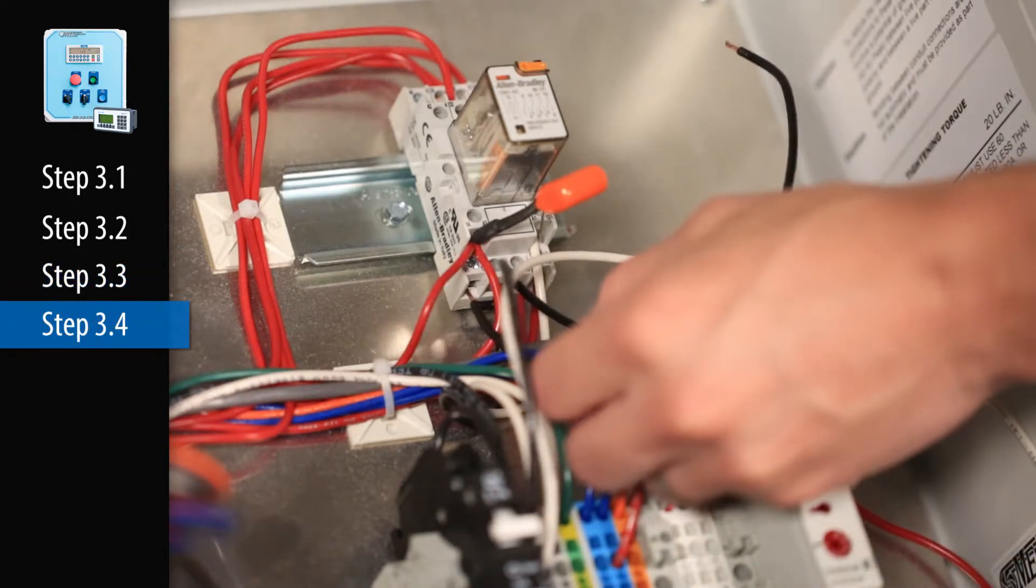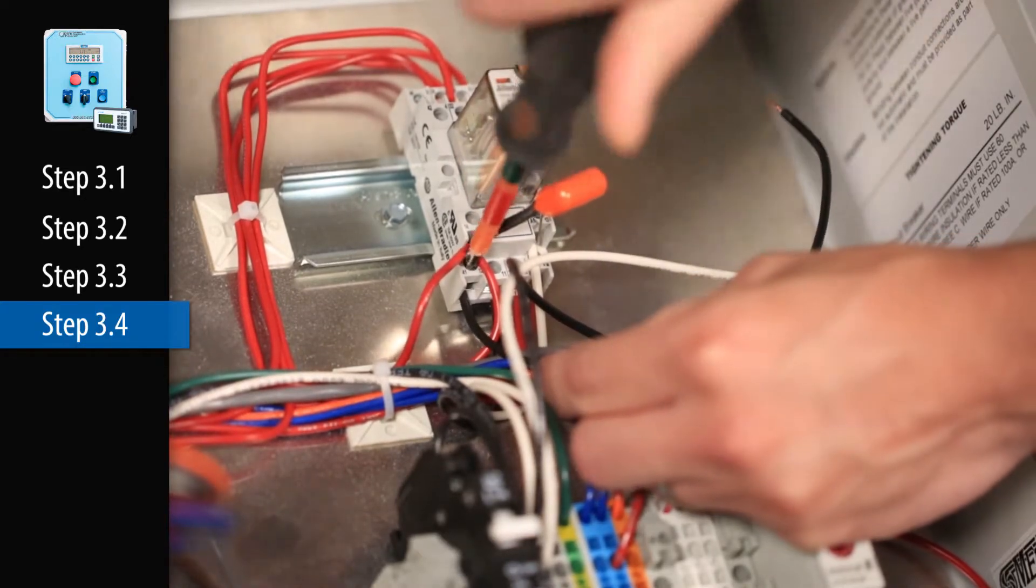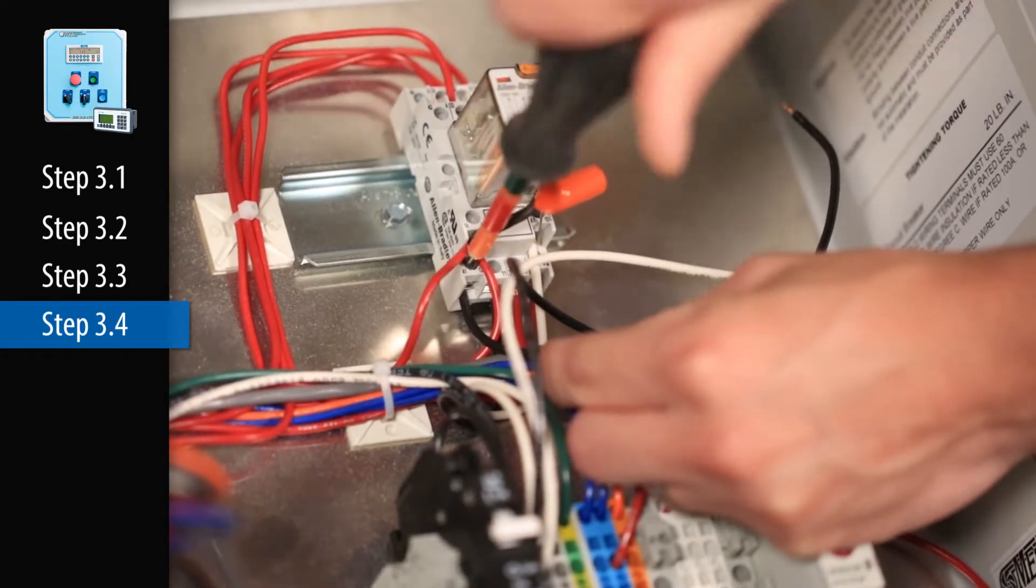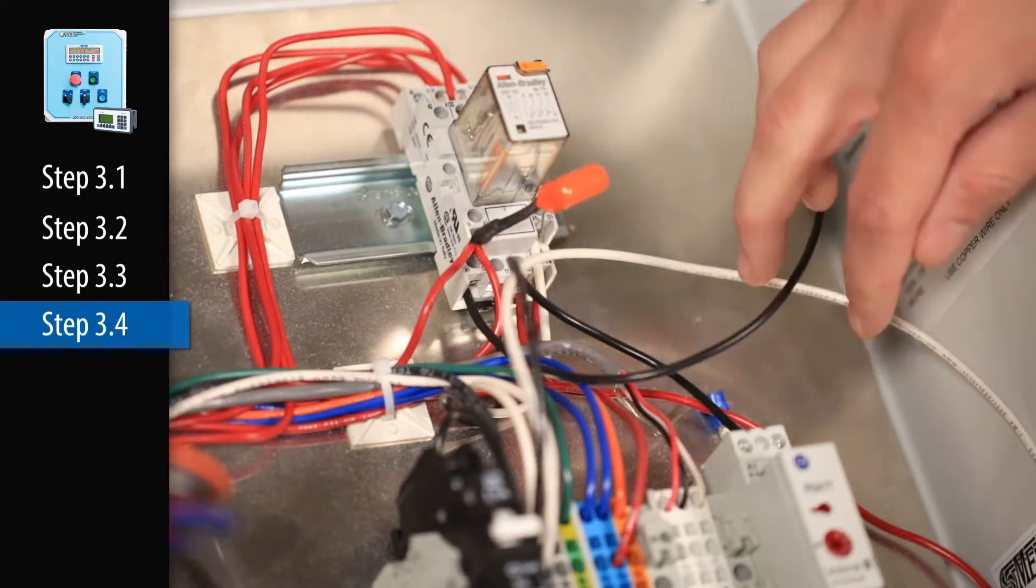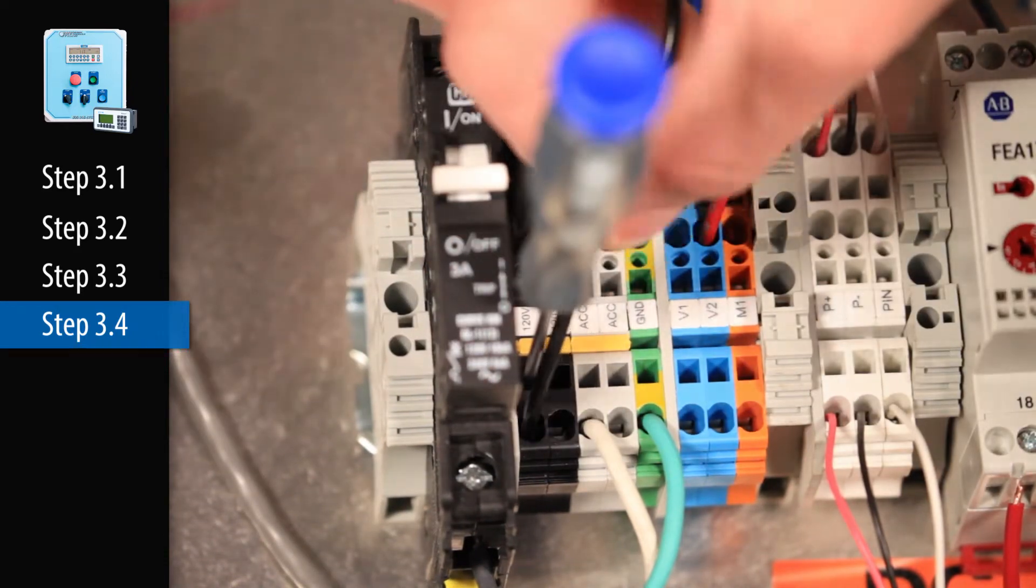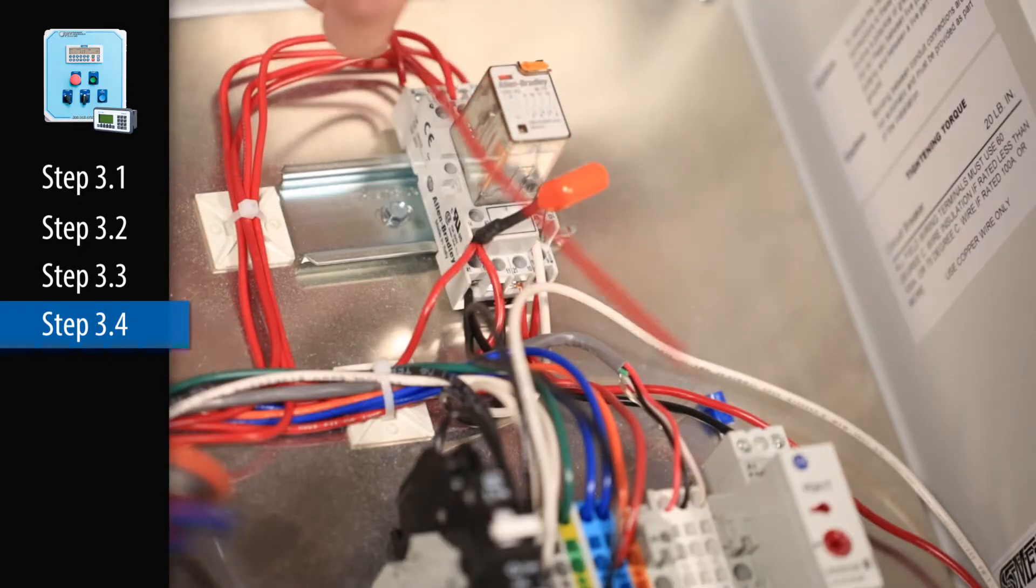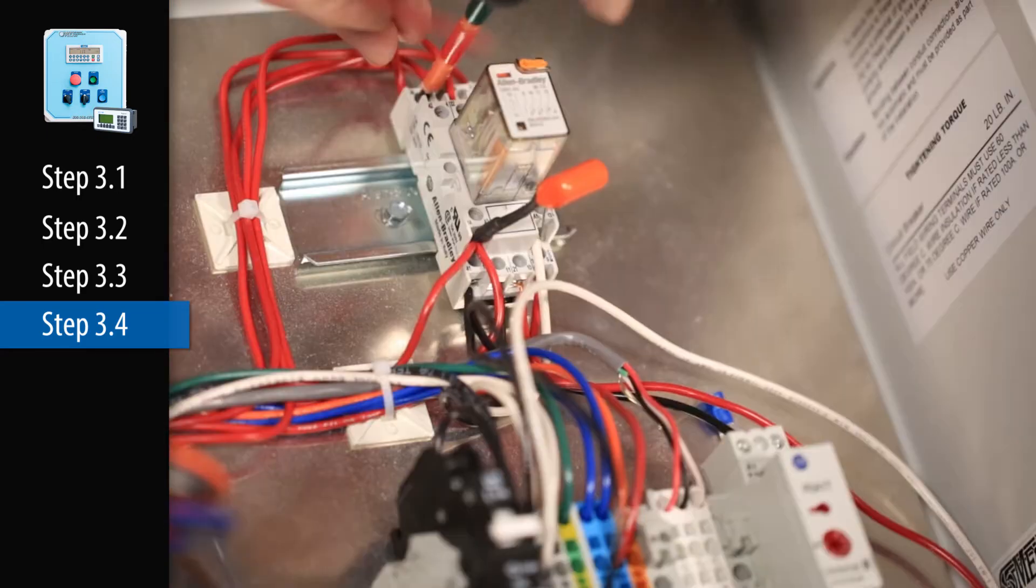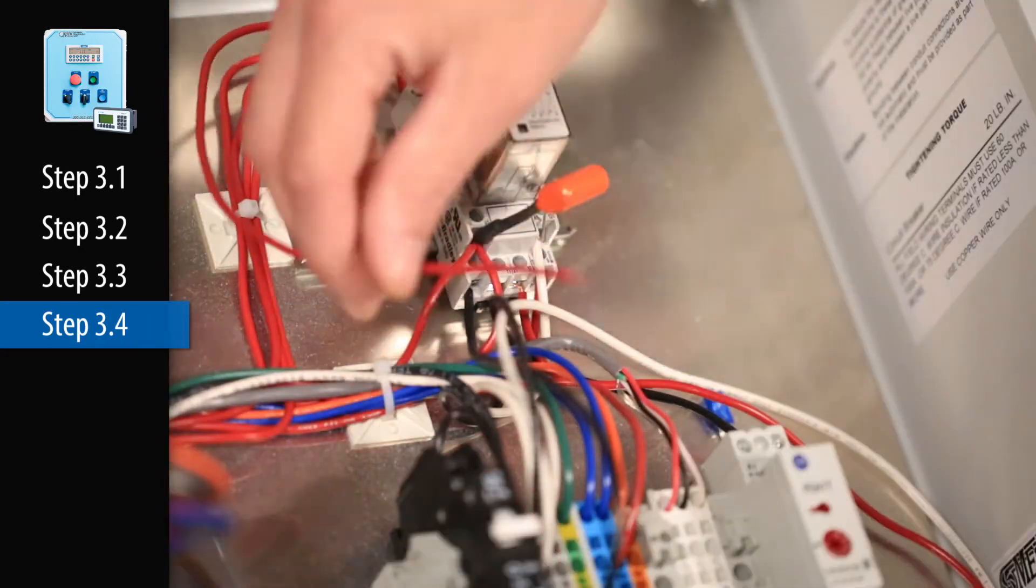Step 3.4. Find the master control cube relay on the back panel. Connect 120 AC power to terminal 12 on the master relay. Run another wire from terminal 8 on the master relay. Connect 120 AC power to terminal A1 on the timer relay.